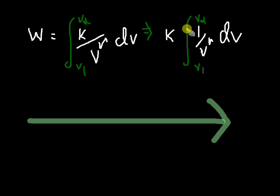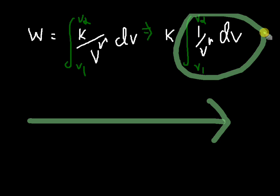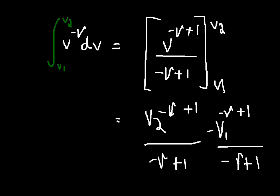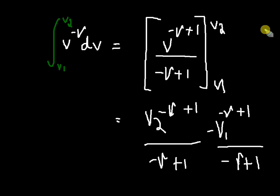We know that the integral of a constant is a constant, so I put that constant out from the integral. I am going to integrate it now — let me demonstrate this integration step. We know that the integral of 1 by V raised to gamma can be written as V raised to minus gamma. Using the formula: x raised to n dx equals x raised to n plus 1 by n plus 1, I apply that formula here to get V raised to minus gamma plus 1 by minus gamma plus 1.